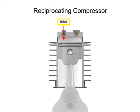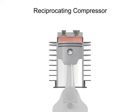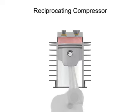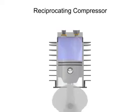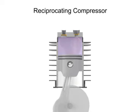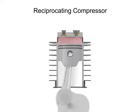The inlet, sometimes called the suction valve, allows atmospheric air to enter the cylinder. The outlet, sometimes called the discharge valve, ejects the newly compressed air from the cylinder. As the crankshaft turns, the piston lowers and raises, changing the available volume within the cylinder.